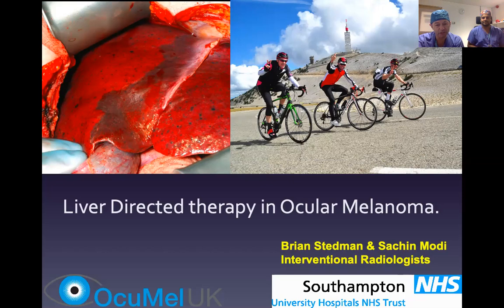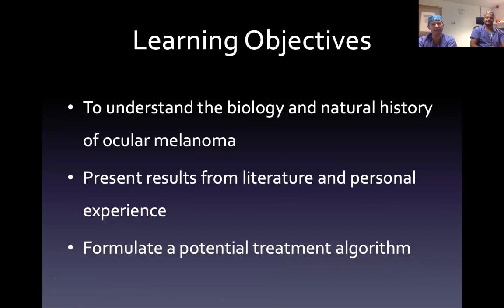The first thing to do is to establish what we want to get out of today. We want to get an understanding of the biology and the natural history of ocular melanoma, because it is different from other cancer types. Then to look at some of the literature about how to manage this disease specifically in the liver, and then to chat about what we do here in Southampton.